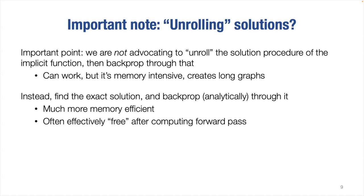The key point I want to make is that this can be done exactly. One common trend in deep learning before implicit methods was to take normal procedures and unroll them in your computational graph — implement a solver in PyTorch and differentiate through it. But this is a very bad idea, because you store every intermediate iterate of your iterative method in memory in your compute graph. Instead, I advocate finding exact solutions using whatever solver you want, then differentiating analytically using implicit differentiation to compute backprop.